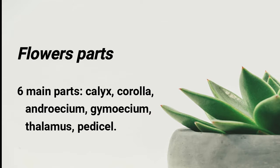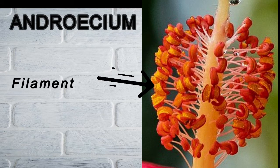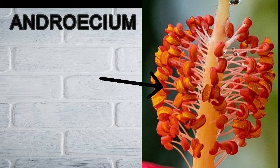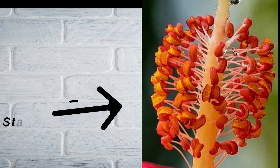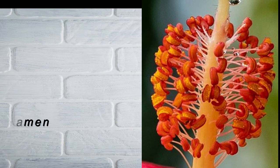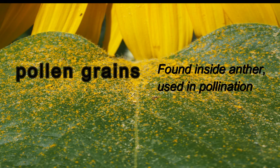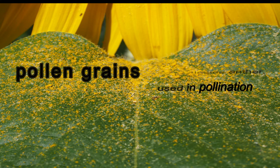First, the androecium has two main parts. The first is the filament, which is the small stick, and the other part is the stamen, which is the small bulbous region — the yellow and red region found there. Inside the yellow bulbs we can find the pollen grains.